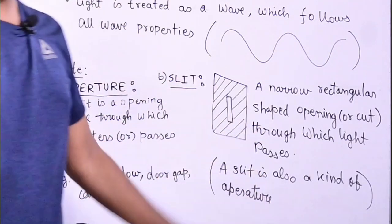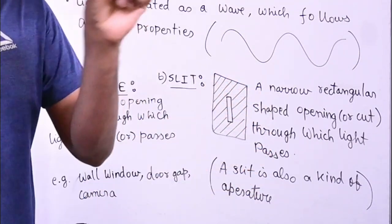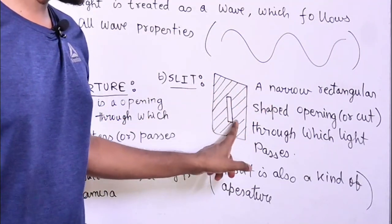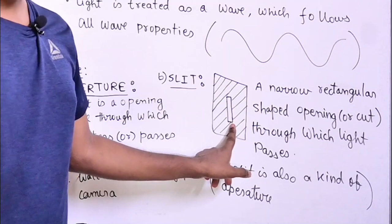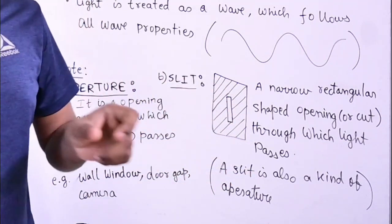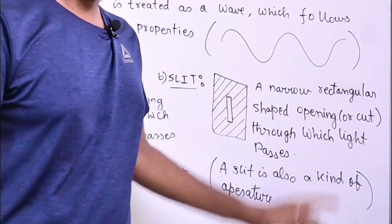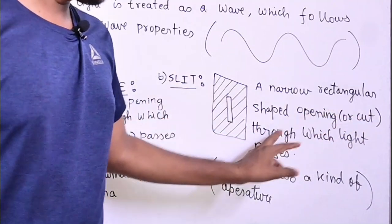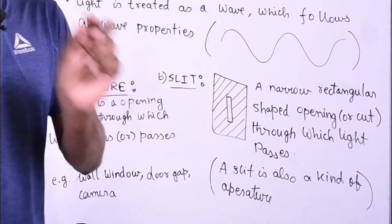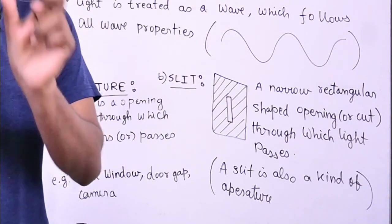A Slit is a narrow rectangular-shaped opening or cut through which light enters or passes. For example, if you take a cardboard box and make a narrow rectangular cut, that is a slit. So a slit is mainly a narrow rectangular opening.